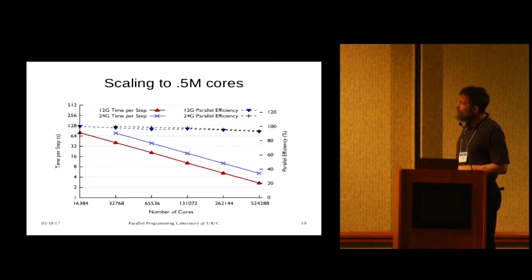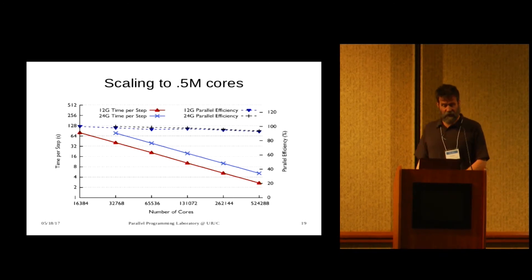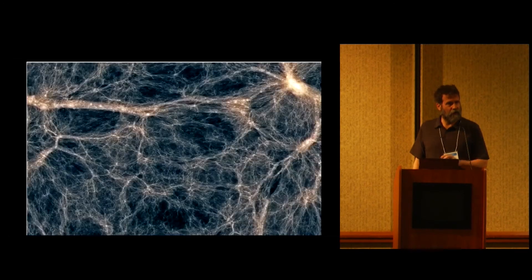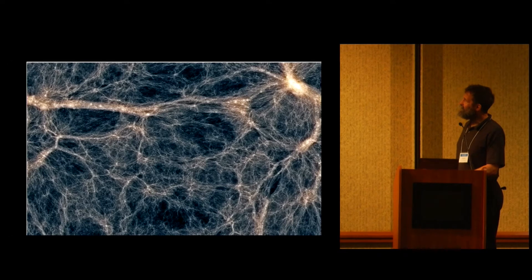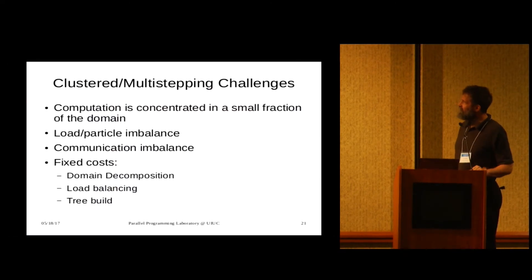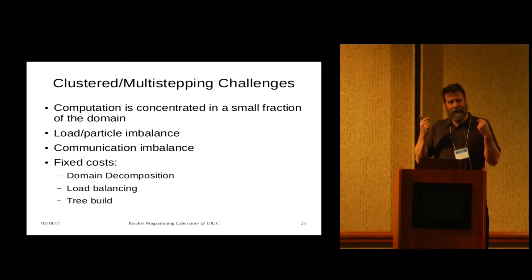For uniform volumes, our code scales very nicely. This is half a million of the integer cores on Blue Waters here, getting 90% efficiency. But the universe is very clustered and clusters are even more clustered. And so you've got a few problems.